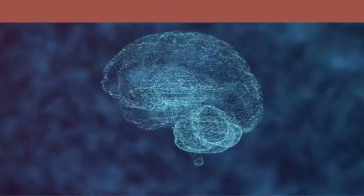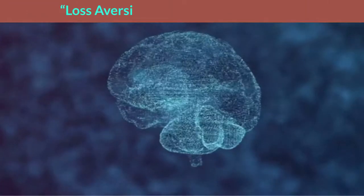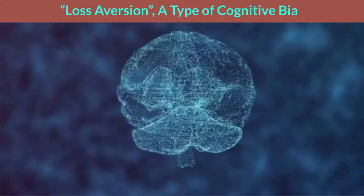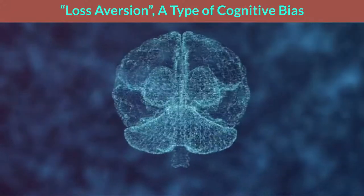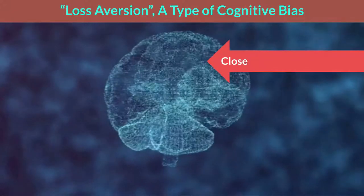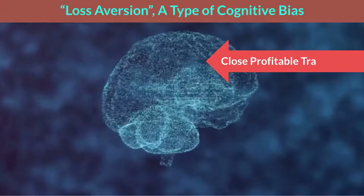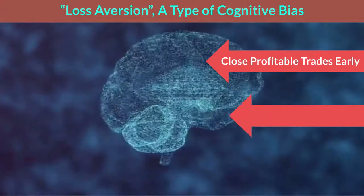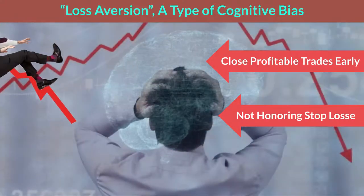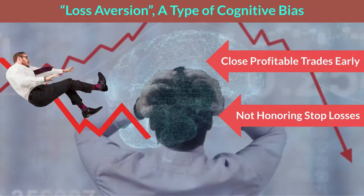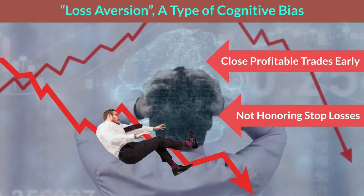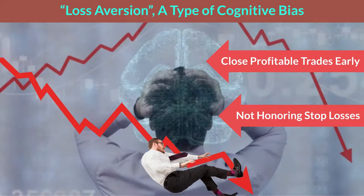This built-in neurological imbalance, known as loss aversion, is a type of cognitive bias which explains why many traders close profitable trades early or are unable to honor their stop losses, resulting in small losses growing larger and out of hand.